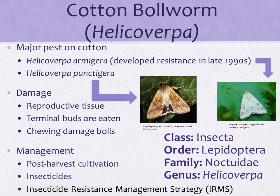Helicoverpa armigera developed resistance against most insecticides in the late 1990s. In order to prevent insecticide resistance, the cotton industry has developed the insecticide resistance management strategy. This strategy is reviewed annually to delay development of resistance of armigera to conventional insecticides. Moreover, post-harvest cultivation to reduce the overwintering stage of Helicoverpa is one of the most important cultural control practices available. Cultivation to a depth of at least 10 centimeters will damage or disturb pupae, seal their emergence tunnels, and trap emerging moths. Cultivation also leaves survivors open to attack by birds, mice, earwigs, and wasp parasites.